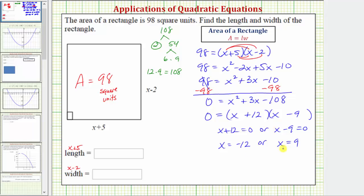So algebraically, we have two solutions, but of course length has to be positive, and therefore, x cannot equal negative 12 for this application problem. So now we know that x equals nine is our solution.